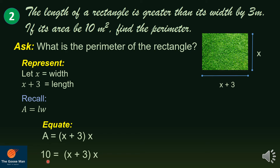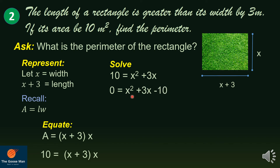So our equation is 10 equals x plus 3 times x. Distributing x, we get 10 equals x² plus 3x. Subtracting 10 from both sides gives 0 equals x² plus 3x minus 10. Applying factoring of the quadratic trinomial, this equals 0 equals x plus 5 times x minus 2.